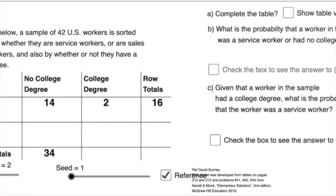A two-way table gathers data. We know that we have a sample of 42 U.S. workers, so they surveyed 42 people, and they asked them basically whether they were service workers or sales workers. Everyone's either sales or service, and then whether or not they had a college degree.